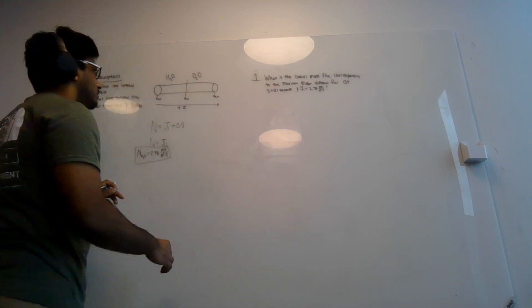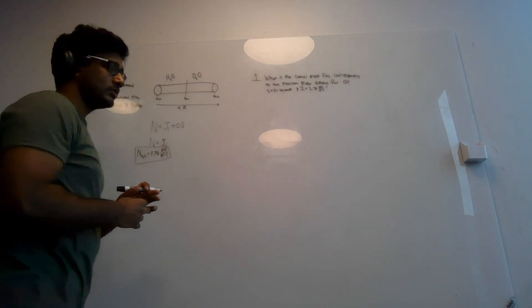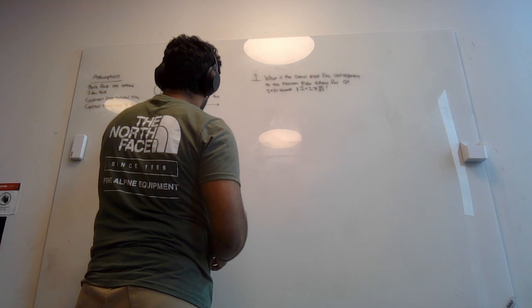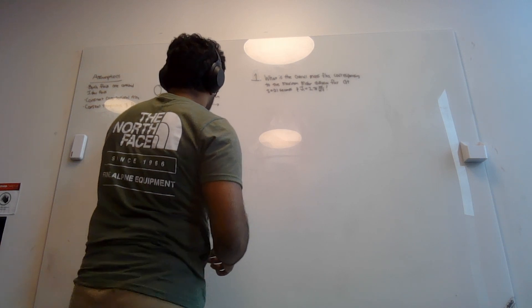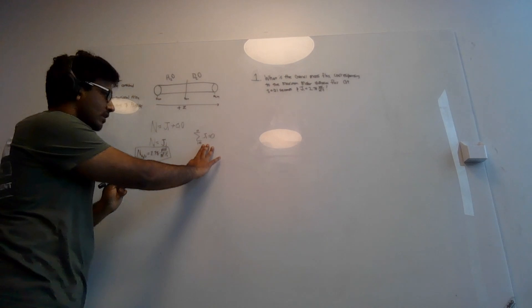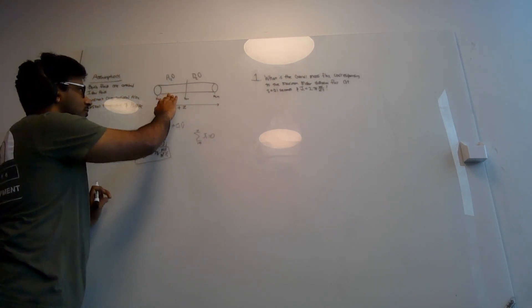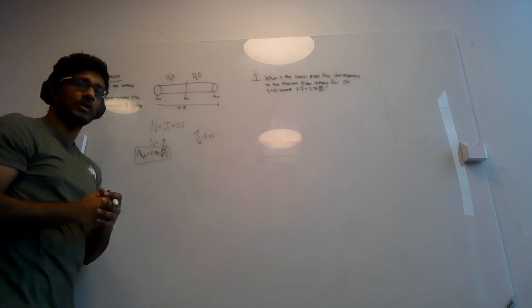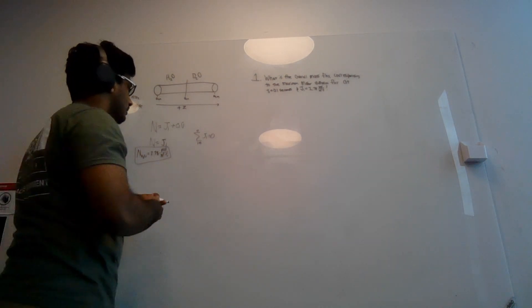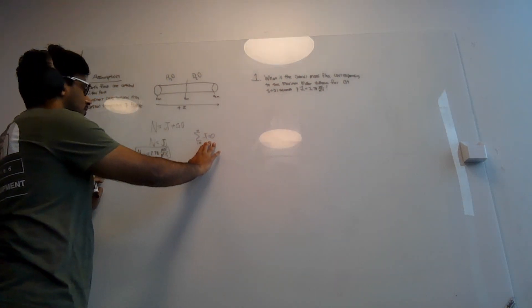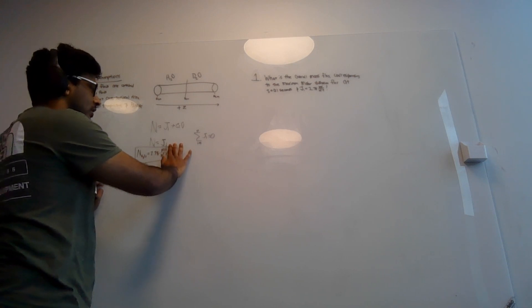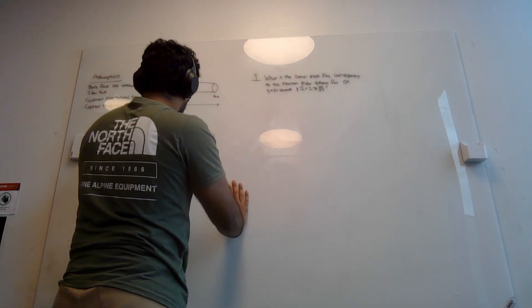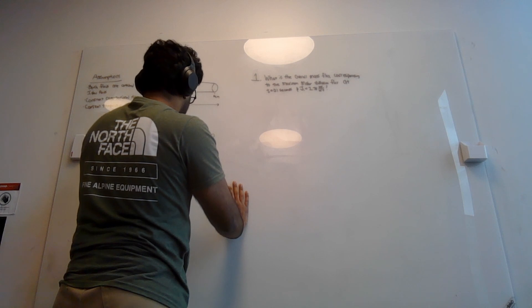Now considering D2O, we can say that the sum of the molar diffusive fluxes equals zero, because if H2O is moving from left to right and D2O is moving from right to left, the molar diffusive fluxes cancel each other out as the system heads toward equilibrium. Therefore, the total molar flux for D2O is negative 2.78 moles per meters squared per second.